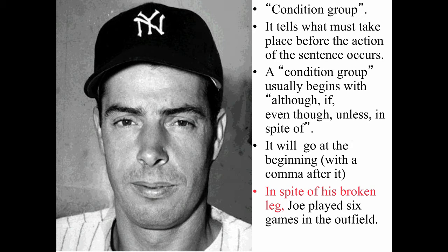The condition group starts with one of those words, goes at the beginning of the sentence, and is followed by a comma — because having a group of words in the front makes it an introductory phrase or introductory clause. So an example could be: 'In spite of his broken leg, comma, Joe played six games in the outfield.'